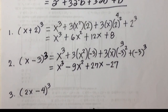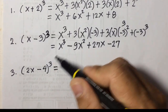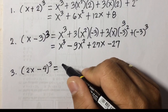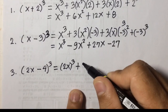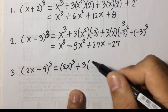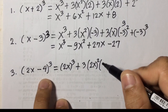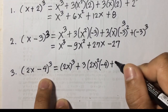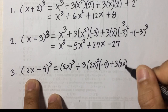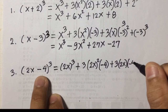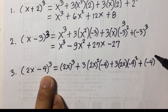Last one, number 3: quantity of 2x minus 4 cubed. The first term of the answer is the cube of the first term, so we have 2x cubed. The second term is plus 3 times 2x squared times the second term negative 4. The third term is plus 3 times 2x times negative 4 squared. The last term is the cube of negative 4.